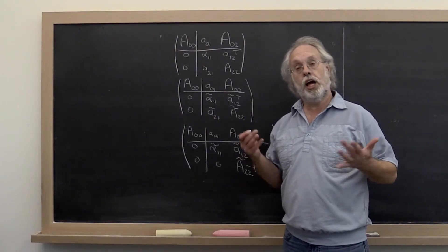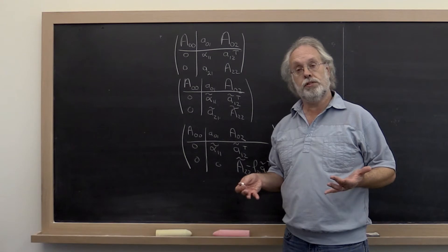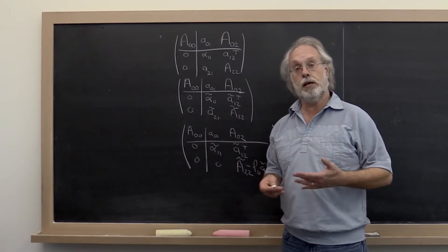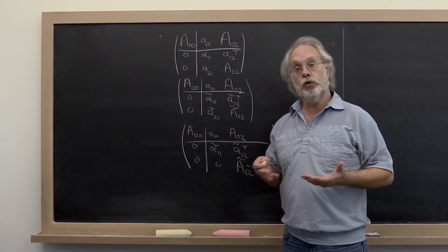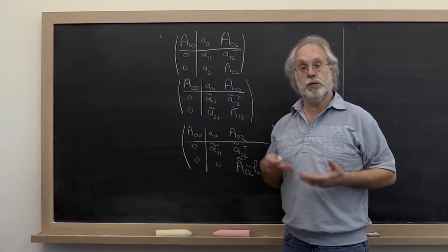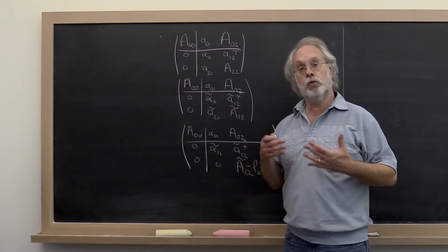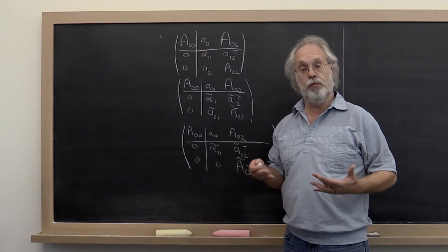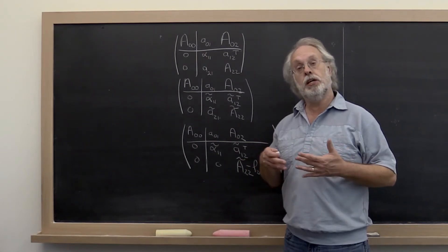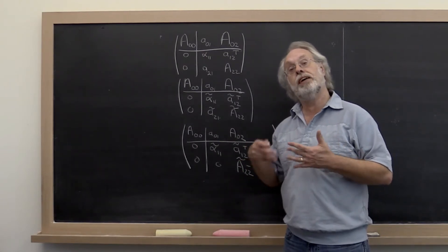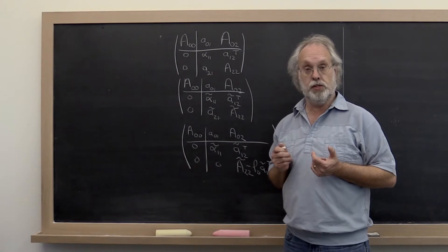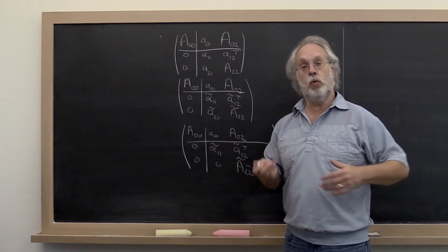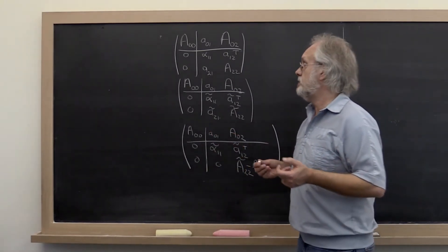The whole point of talking about pivot matrices was to have an elegant way of describing what we're going to call LU factorization with partial pivoting. We're going to describe a specific algorithm for computing that — namely, we're going to modify the right-looking algorithm that we started with. Remember, that's the algorithm that was equivalent to Gaussian elimination.